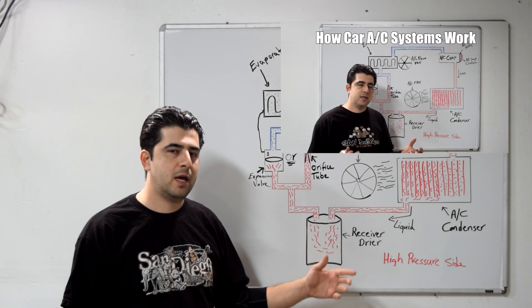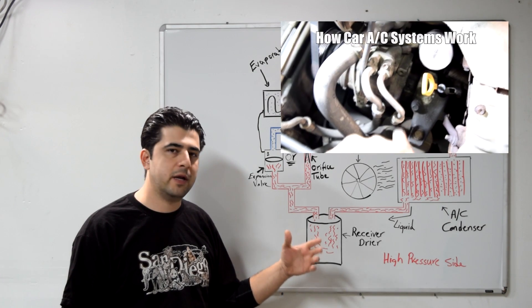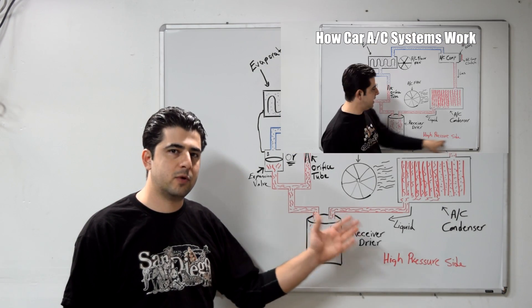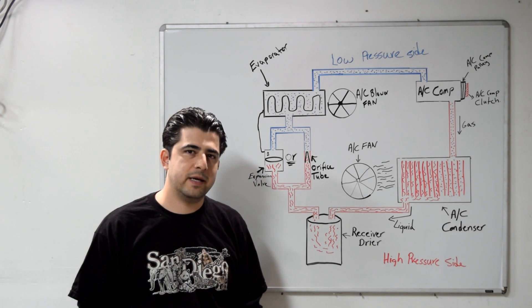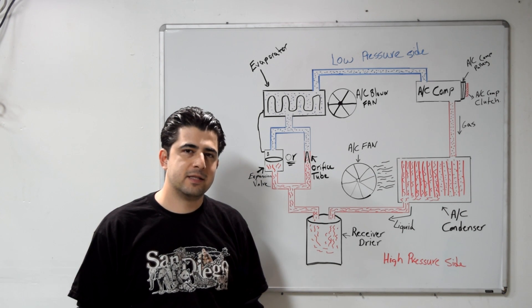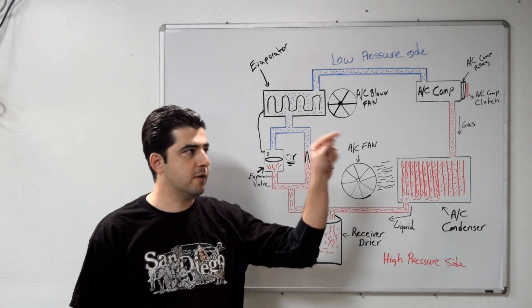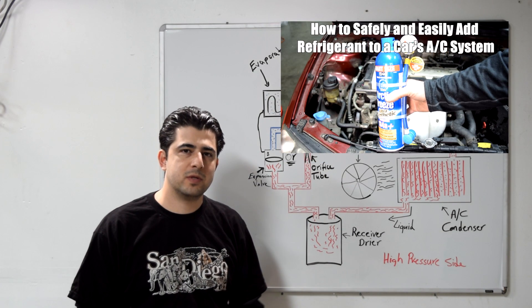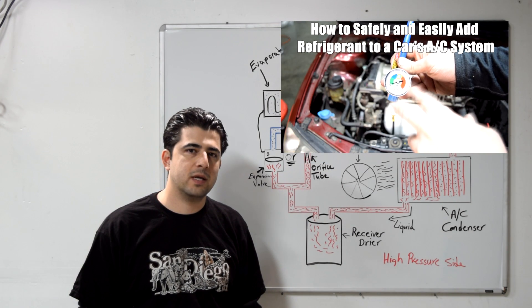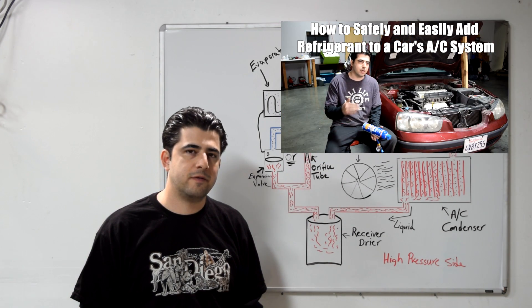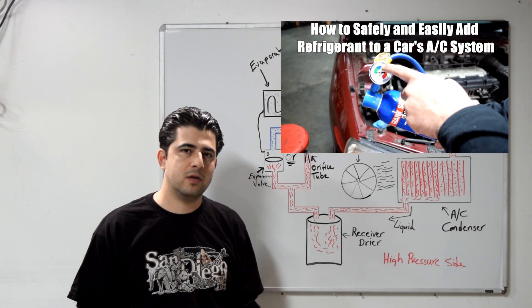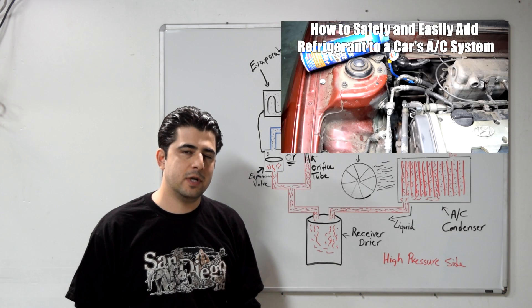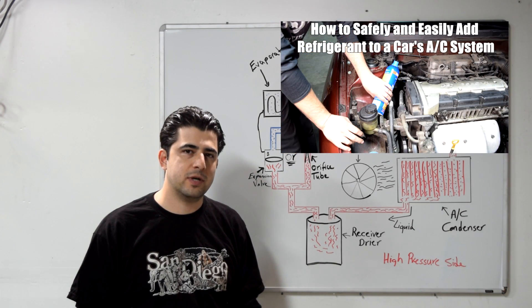If you watch that one first, then this video — which is on how to diagnose problems with the system — will make a lot more sense. For those who have stumbled upon this video because their car's AC stopped working, the most probable cause is probably low refrigerant in the system. In this video, I'll show you how to check for that and how to safely add refrigerant to get your AC working again.